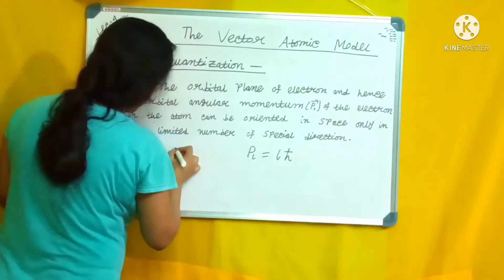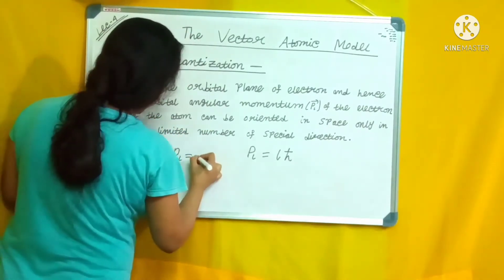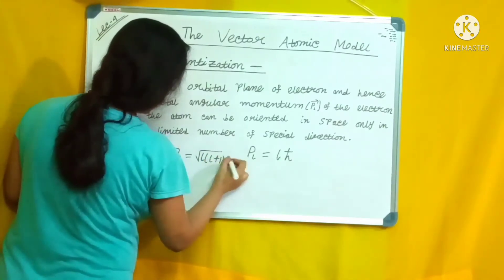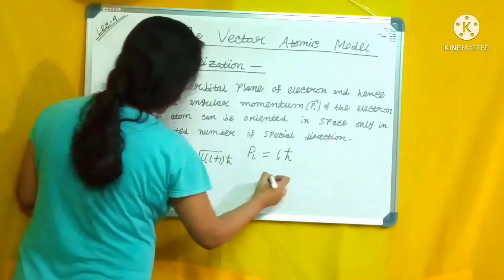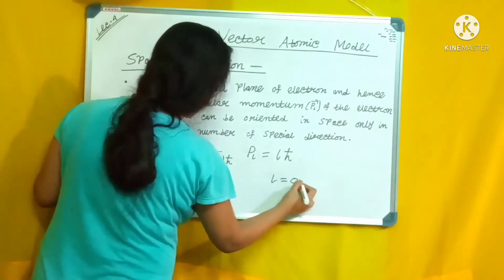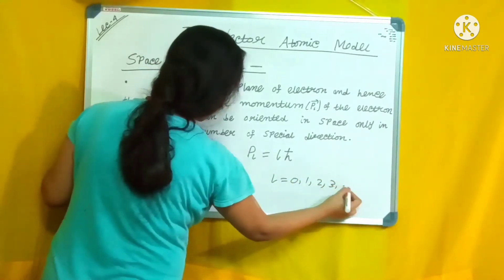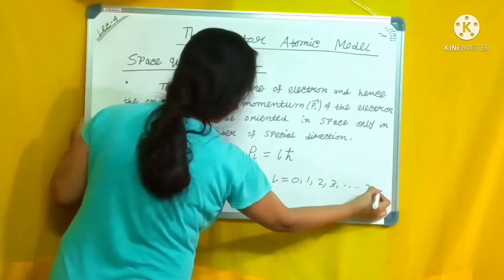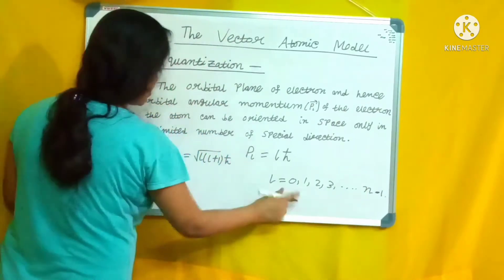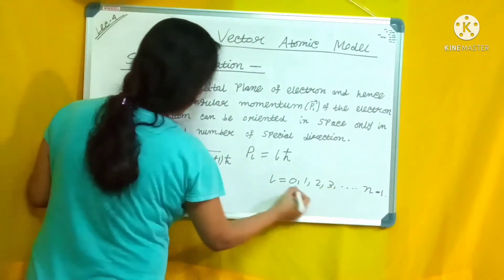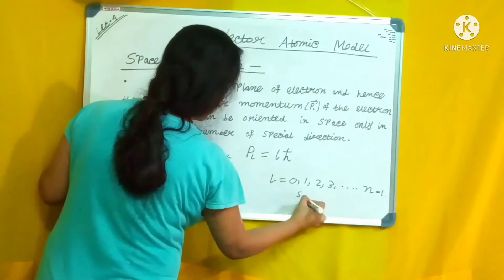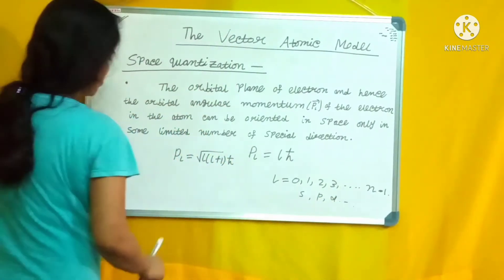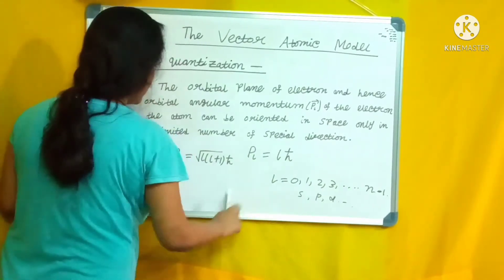Our orbital angular momentum pl equals l·ℏ, or quantum mechanically, pl equals √(l(l+1))·ℏ. Here l can take values 0, 1, 2, 3 up to n−1, where n is the principal quantum number. For l=0 we get the s orbital, for l=1 we get the p orbital, and for l=2 we get the d orbital.